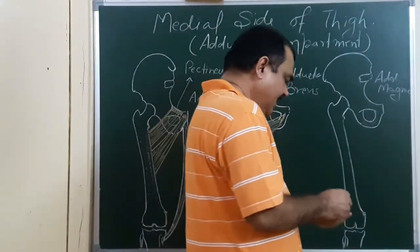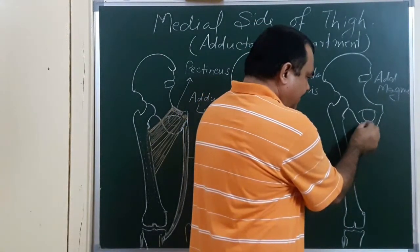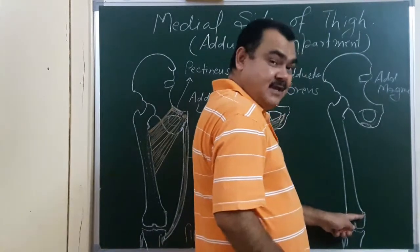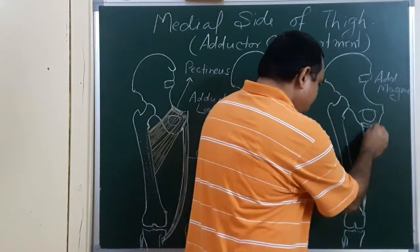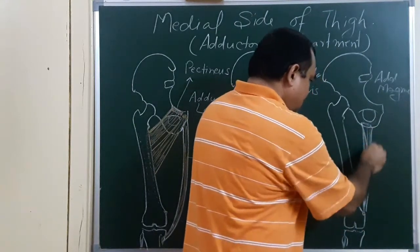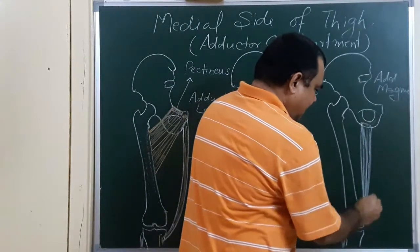Hamstring part takes origin from ischial tuberosity, inferior lateral part of the ischial tuberosity from here and inserted on the adductor tubercle. So this part, this is hamstring part.